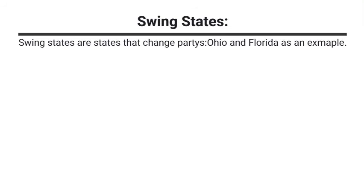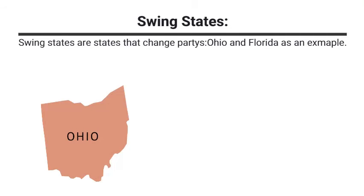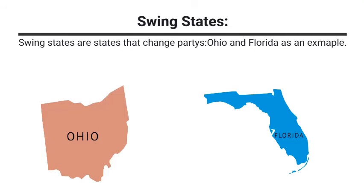Now let's talk about what swing states are in particular. Swing states are states that change parties. Ohio and Florida, as an example, in the past four election cycles have given votes for two different parties — two times Democratic and two times Republican — hence the name swing states.